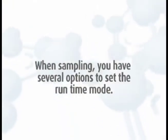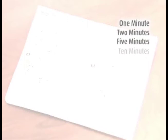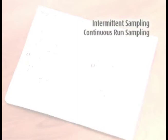When sampling, you have several options to set the run time mode. You can set the pump to start and stop at one minute, two minutes, five minutes, 10 minutes, or 15 minutes. You also have the option to set it for intermittent sampling or continuous run sampling. If using either of these run time modes, see the advanced setup section of the operation manual provided.